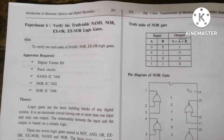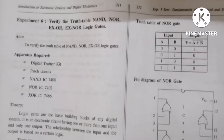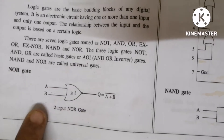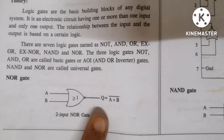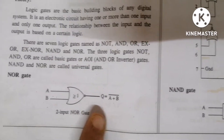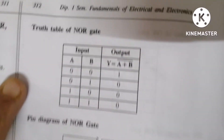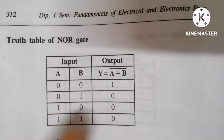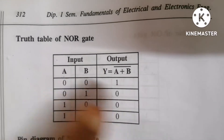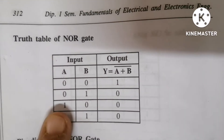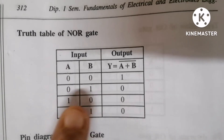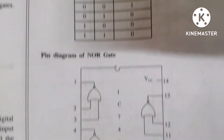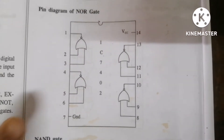First, we study the NOR gate. This is the basic gate diagram of the NOR gate — two inputs and one output. The truth table has inputs A and B with output Y. When both inputs are 0, we should get output 1. For all other conditions — 01, 10, 11 — we should get output 0.